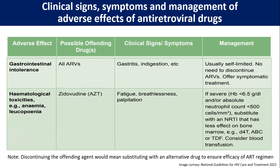GI intolerance can be produced by all ARVs, characterized by symptoms of gastritis and indigestion, usually self-limited — no need for discontinuing ARV, we can provide supportive therapy. Hematological toxicity such as anemia and leukopenia is produced most commonly by zidovudine, characterized by fatigue, weakness, and pallor. If severe — hemoglobin less than 6.5 g/dL or absolute neutrophil count less than 500 cells per cubic millimeter — we substitute with an NRTI that has less effect on bone marrow, such as stavudine, abacavir, or tenofovir, and we should provide blood transfusion.